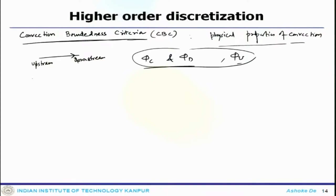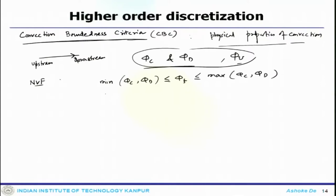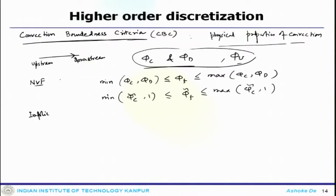In the normalized value framework the numerical convection scheme is monotone. Monotonicity is one important property, which can be expressed mathematically as: min(phi_c, phi_d) ≤ phi_f ≤ max(phi_c, phi_d). Normalizing this condition gives: min(phi_c_tilde, 1) ≤ phi_f_tilde ≤ max(phi_c_tilde, 1). This is called the convection boundedness criteria for implicit steady state flow.